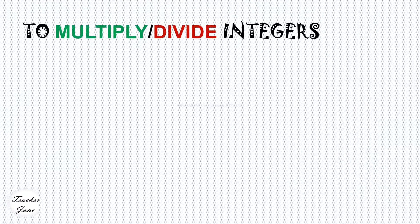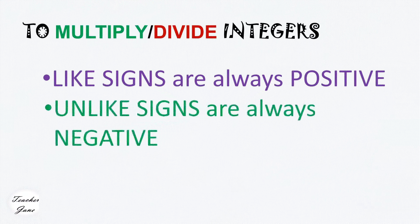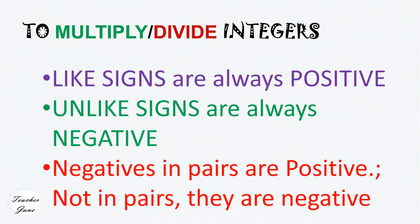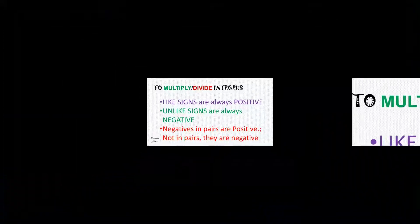To generalize: to multiply or divide integers, like signs always give a positive result, and unlike signs always give a negative result. Negatives in pairs are positive; not in pairs, they are negative.